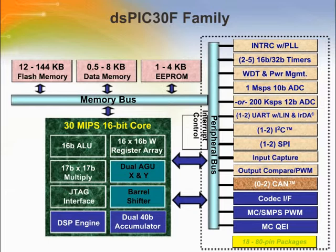The first member of the DSPIC family is the DSPIC30F. The core now has a DSP engine that can perform a 16×16 multiply-and-accumulate operation in a single cycle. The accumulator is 40 bits wide to handle overflow from a 16×16 multiply, which normally gives a 32-bit result. A codec interface is available for speech. The DSPIC30F is also designed for motor control, with a special motor control PWM peripheral, a quadrature decoder interface, and high-speed switch mode power supply PWM.